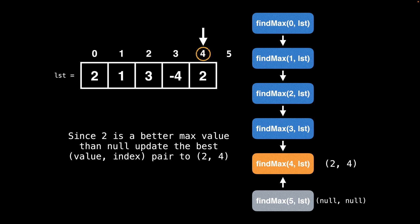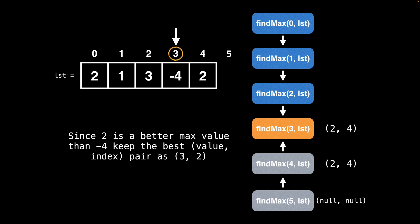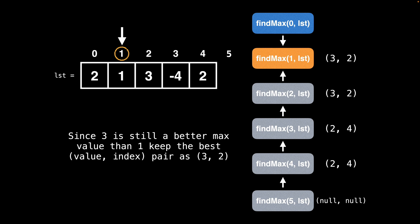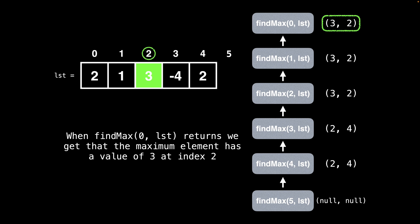On the callback, we find that the value of two is better than a maximum value of null, so we update the best value index pair to two, four. Since two is greater than negative four, keep the best value index pair as two, four. Next, three is a greater max value than two, so update the best value index pair to three, two. After that, three is still a better max value than one, so keep the best value index pair as three, two, and similarly for the next position. In the end, we find that the maximum element is three with an index position of two. The way we did that was by propagating the value index pair across recursive calls and comparing the current value to the best known value and updating accordingly.